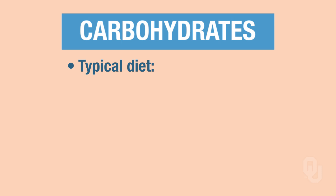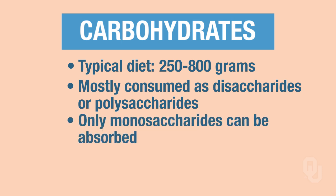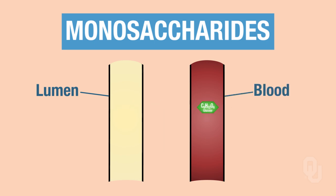In a typical diet we actually consume about 250 to 800 grams of carbohydrates. Most of these are consumed as disaccharides or polysaccharides. Only monosaccharides can be absorbed—meaning we can take them from the lumen of the gut and transport those monosaccharides and absorb them into the blood, from lumen to the blood.